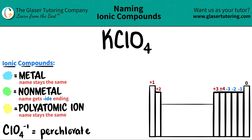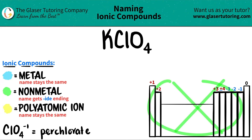In this case we have three different elements: we have potassium, we have chlorine, and then we have oxygen. So three different elements. I know that I have a polyatomic ion, but just remember that polyatomic ions are never in the periodic table — you have to memorize those.